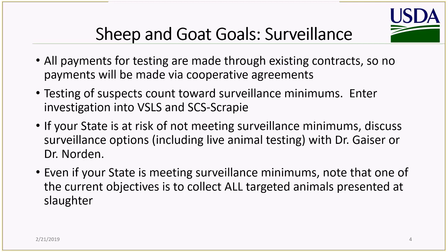If your state is meeting their surveillance minimums, that's great. But note that one of the current objectives of the sheep and goat health commodity is to collect all targeted animals that are presented at slaughter. So even if you've met your minimum, we want you to continue to collect samples. Our goal is to collect everything that meets our targeted surveillance criteria.